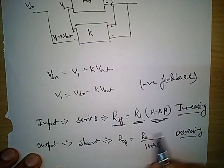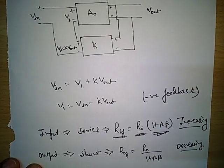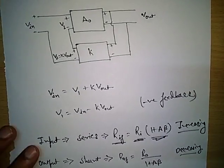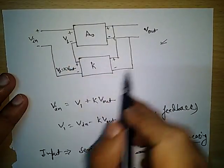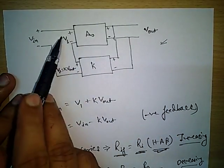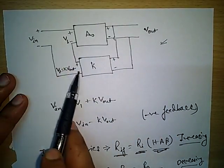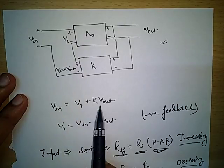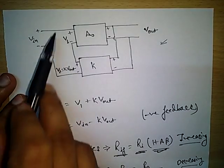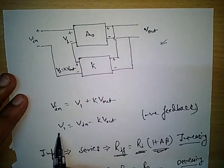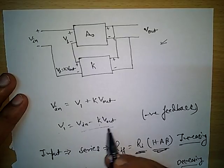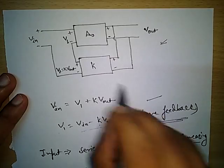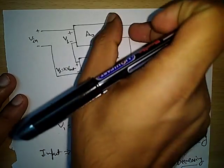From the given GATE question, we can see that V_in = V_1 + K·V_out by KVL, so V_1 = V_in − K·V_out. For a positive value of K, this represents a negative feedback connection. This is of course a voltage-voltage feedback connection.